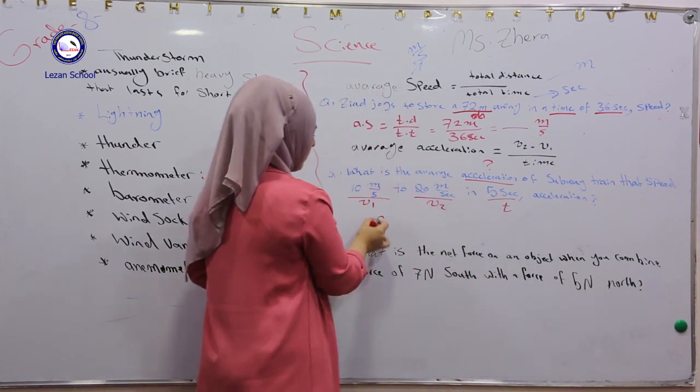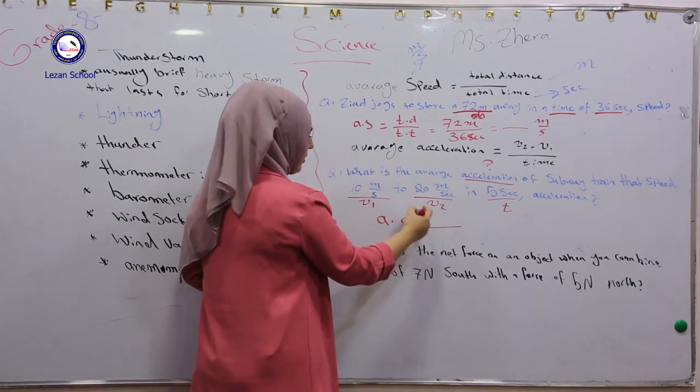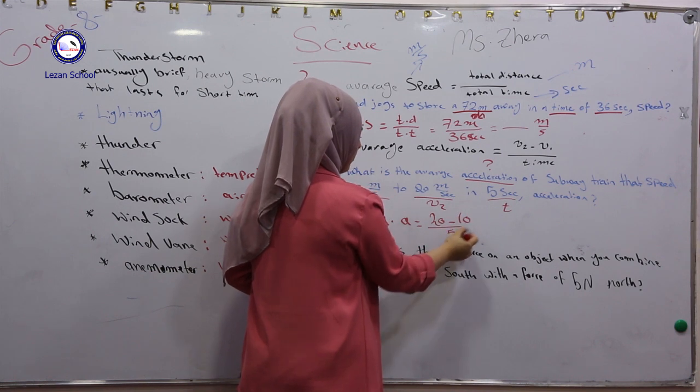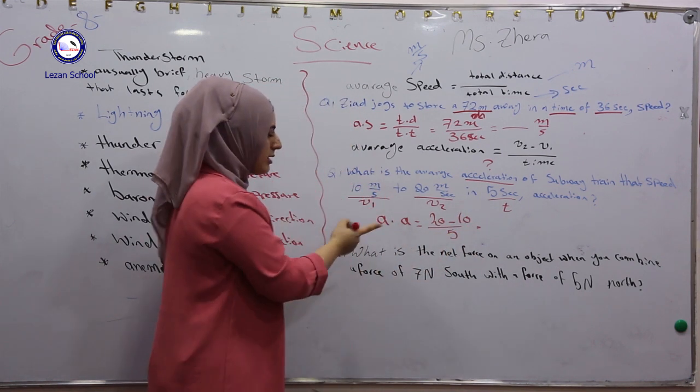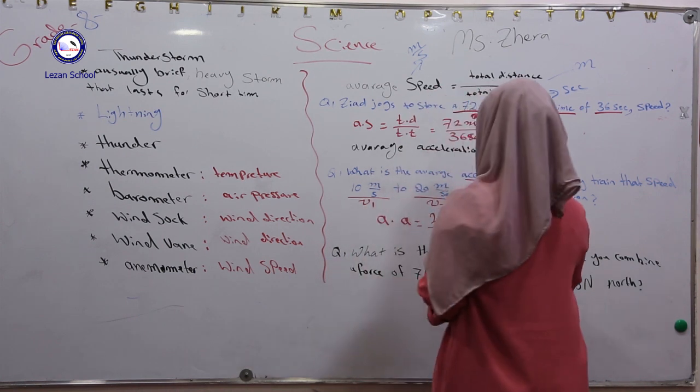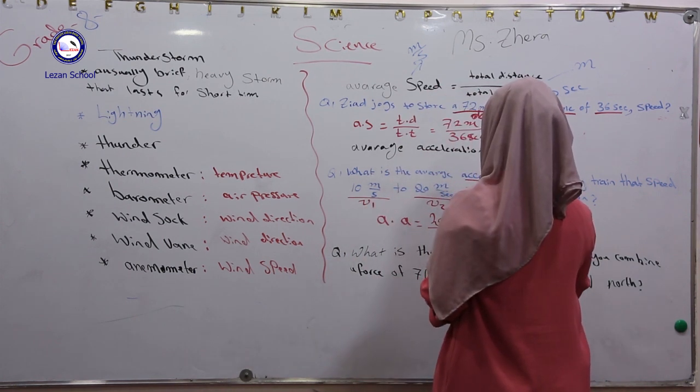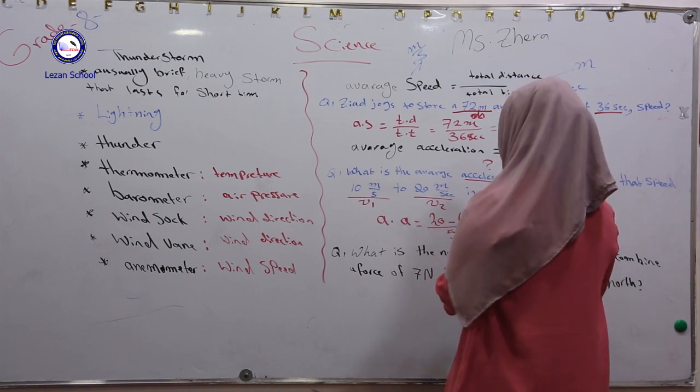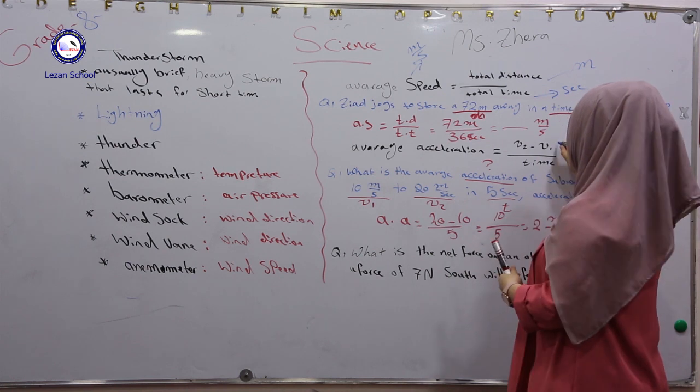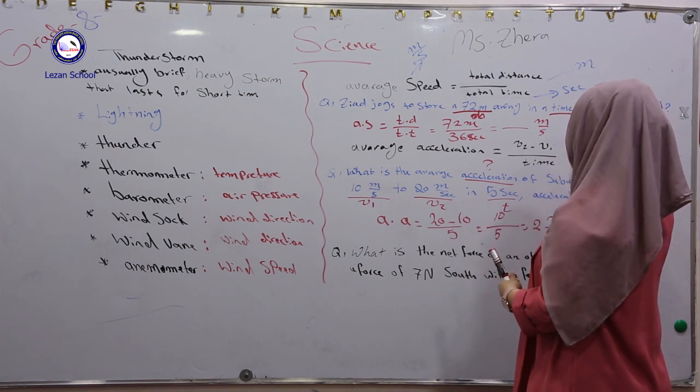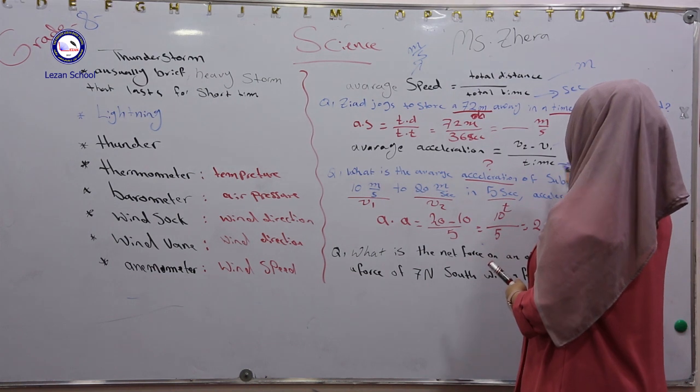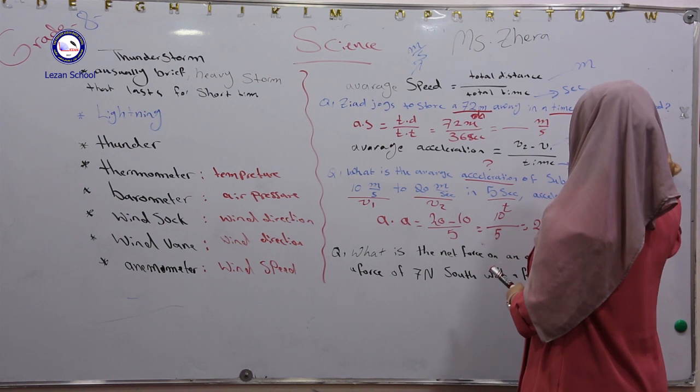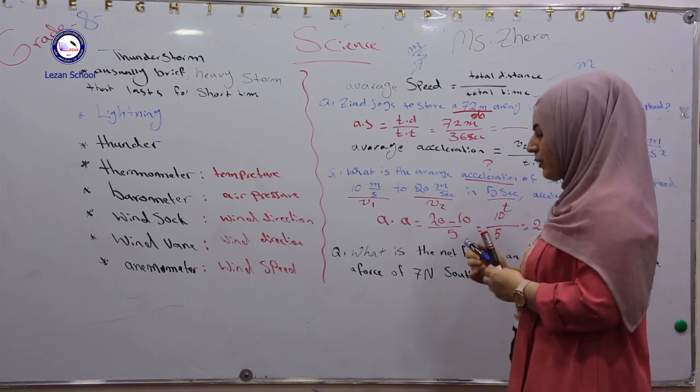Say the average acceleration equals V2, how much? V2 is 20, minus 10, over 5. You say 20 minus 10 over 5. 20 minus 10 equals 10. 10 over 5 equals 2. 2 what? Meters per second squared. Why meters per second squared? Because each velocity is meters per second, and time is also measured in seconds. So when you say meters per second divided by seconds equals meters per second squared. This is about the unit of acceleration.